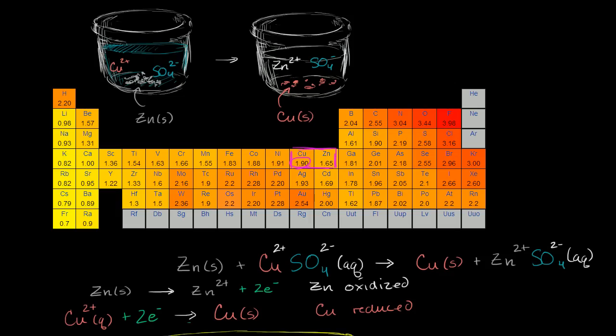In the last video, we saw that if you took some solid zinc and stuck it in a solution of copper sulfate, the zinc will essentially give electrons to the copper. So then you have zinc cations that are in the solution. Essentially, it will become a solution of zinc sulfate. And the copper, once it gets those two electrons, is going to go into its neutral, solid state, and it's going to precipitate out of the solution.